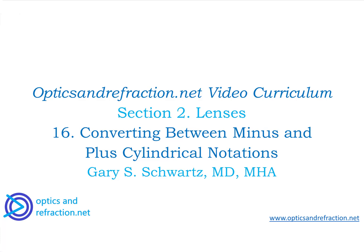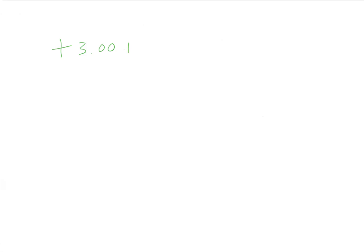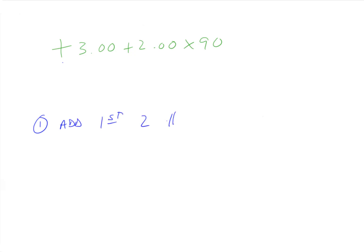As promised, there is an easy shortcut to get you to go between plus cylinder and minus cylinder. So let's look at this example where we have, say, plus 3, plus 2, axis 90. It's a three-step process because there's three parts to the equation, so you have one step for each part. We're going to be going from plus cylinder to minus cylinder here, and it works if you go from minus to plus as well. So step one is add the first two numbers together.